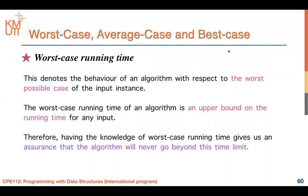Do you remember how many cases we have to concern about? When we talk about time complexity, we will focus on the worst case, average case, and best case. The worst case running time is the upper bound or the maximum limit of the running time of the algorithm. Having knowledge of the worst case running time gives us assurance that the algorithm will never go beyond this time limit.